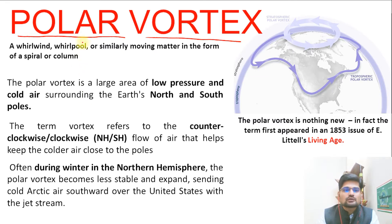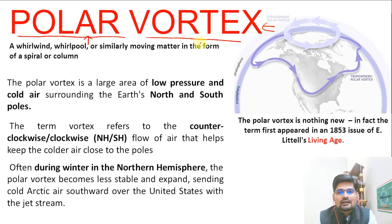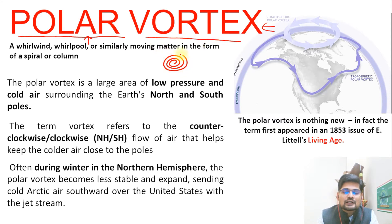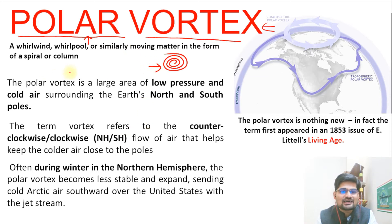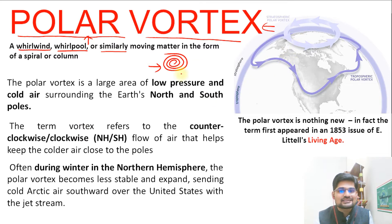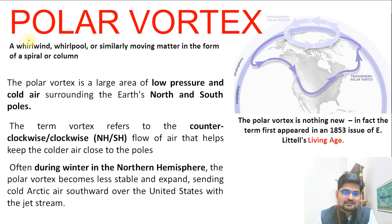There are two words here: one is 'polar' and the other is 'vortex.' Vortex is basically a whirling action. Remember, whenever you take lots of water in a bucket and keep whirling it, there is a whirl created. Even in your kitchen sink or your washing machine, you can find it. This whirlwind or whirlpool that is created — that is called a vortex. It's a whirling action. Now, how is this whirling action related to polar areas? That is where the creation of the polar vortex happens.